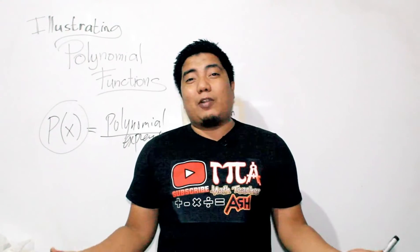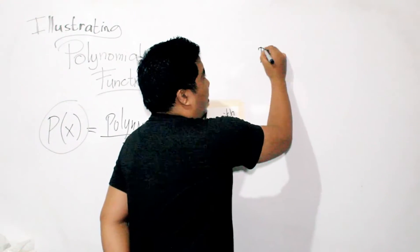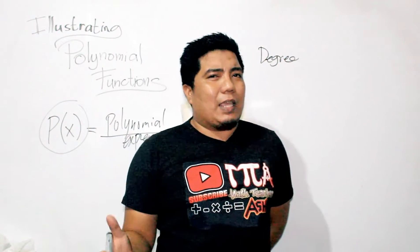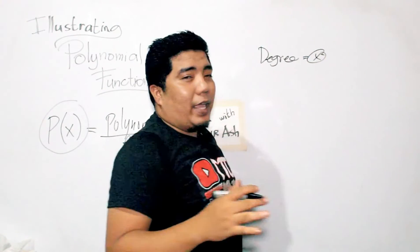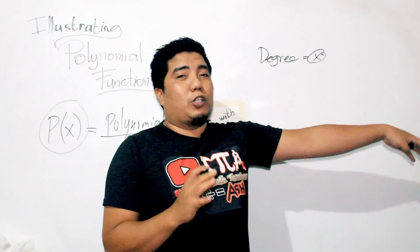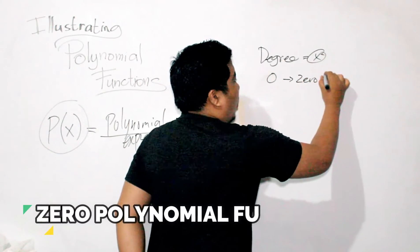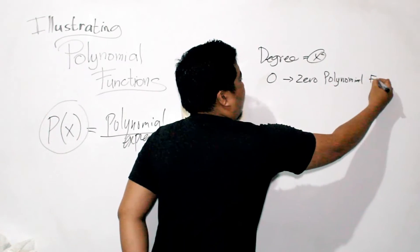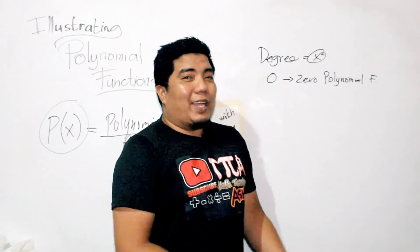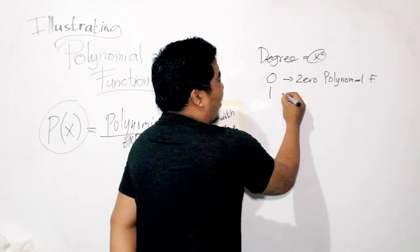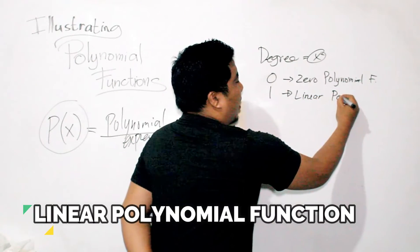Now, what are the different types of polynomial functions? The types of polynomial function are based on its degree. The degree is the highest exponent in the given polynomial function. If you have a degree of zero, that is known as the zero polynomial function — for example, pi, because pi doesn't have any variable x. If you have degree one, meaning x to the power of one, that is known as the linear polynomial function, which are known as linear equations in our previous years.